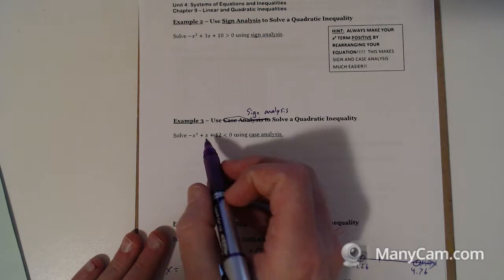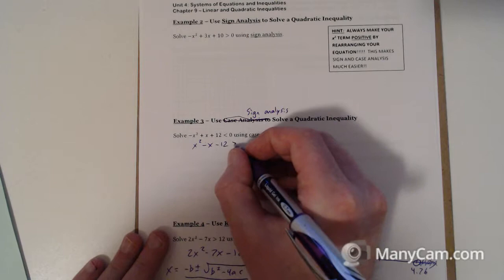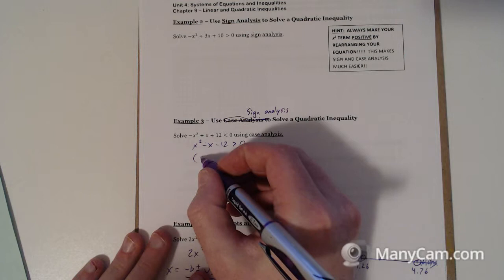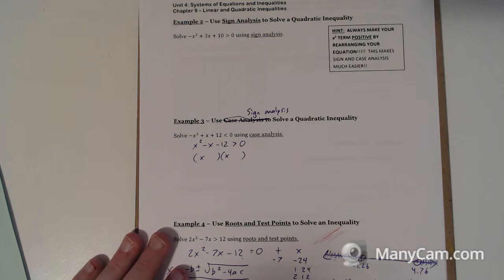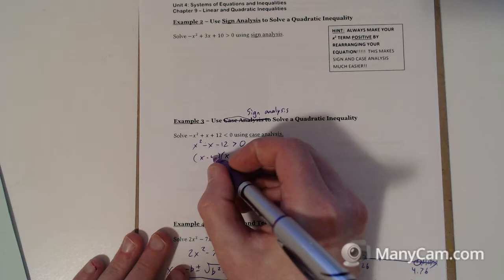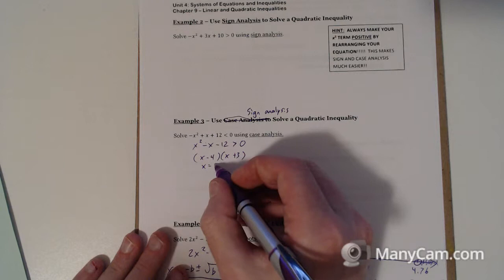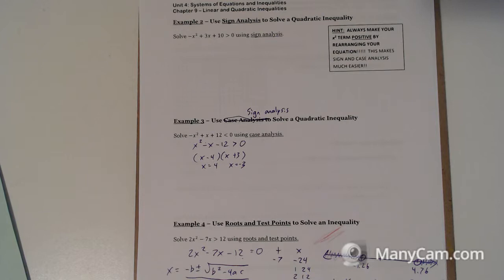So once again, you want to find the roots. So factor this. We're going to divide by negative 1. So x squared minus x minus 12 is now greater than 0. Factor that. And that's going to be two numbers only one apart, 3 and 4, where 4 is negative. So our solutions is x equals 4 and x equals negative 3. And those are going to be the points where they change, but we don't know how they change yet.